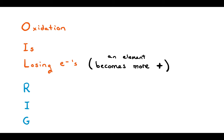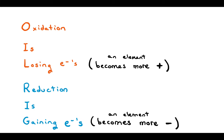RIG stands for reduction is when you gain electrons in a reaction. So from the left side of a reaction arrow to the right side, an element would gain electrons and become more negative.